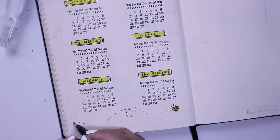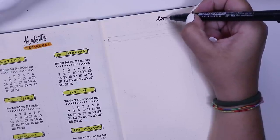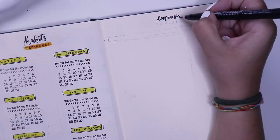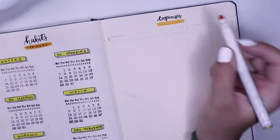Then for my expense trackers, I always keep my expense trackers the same just because they're the most functional part of my bullet journal.